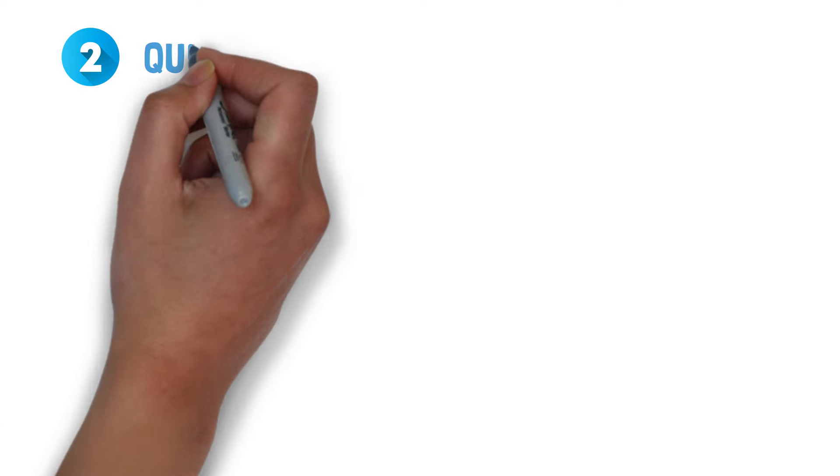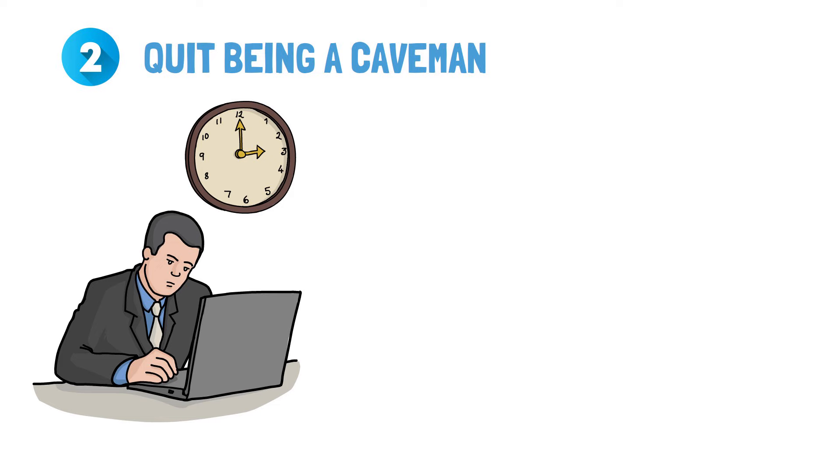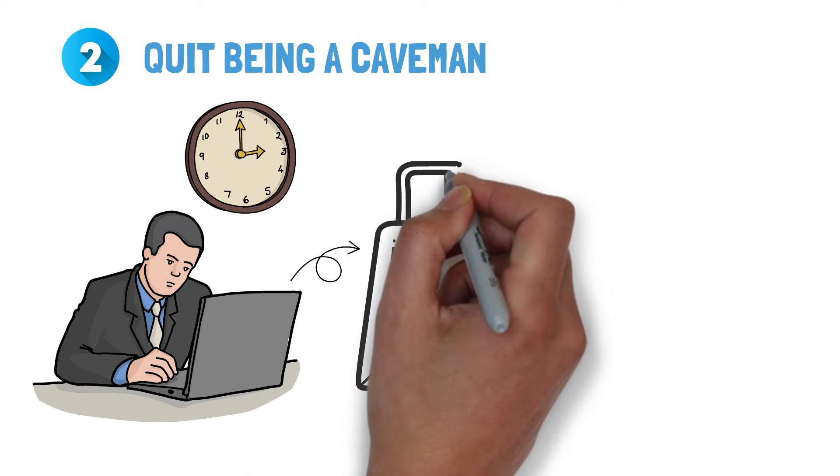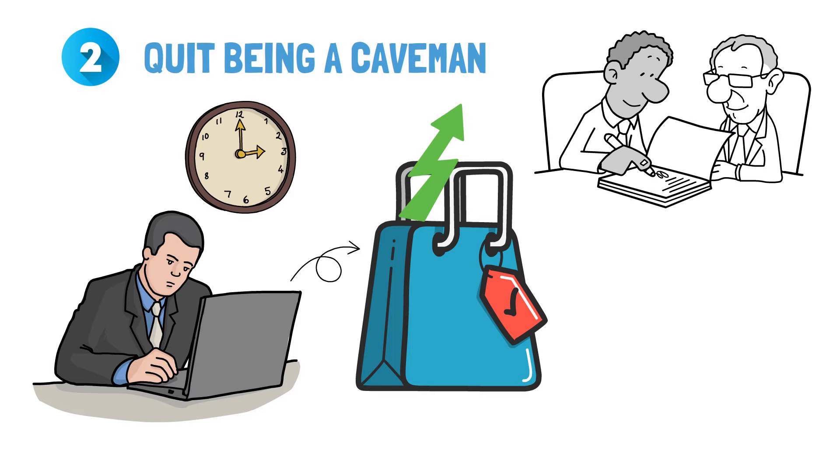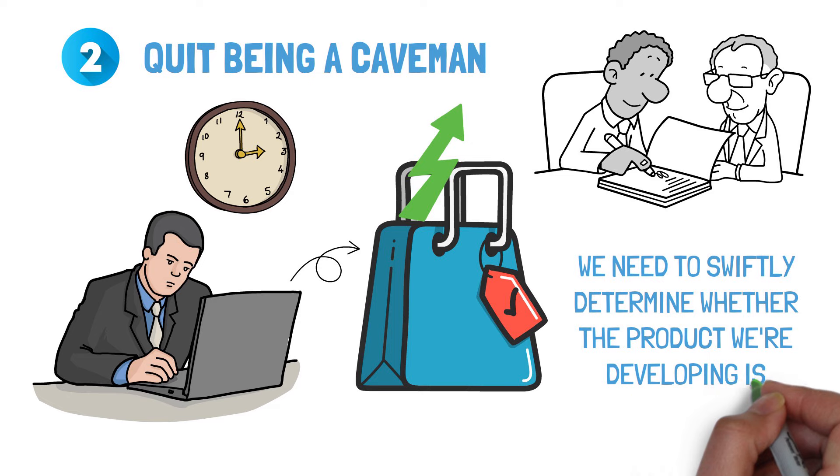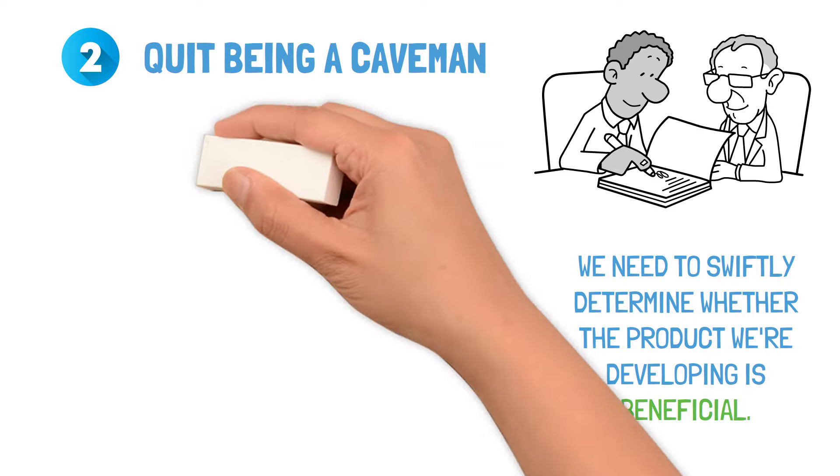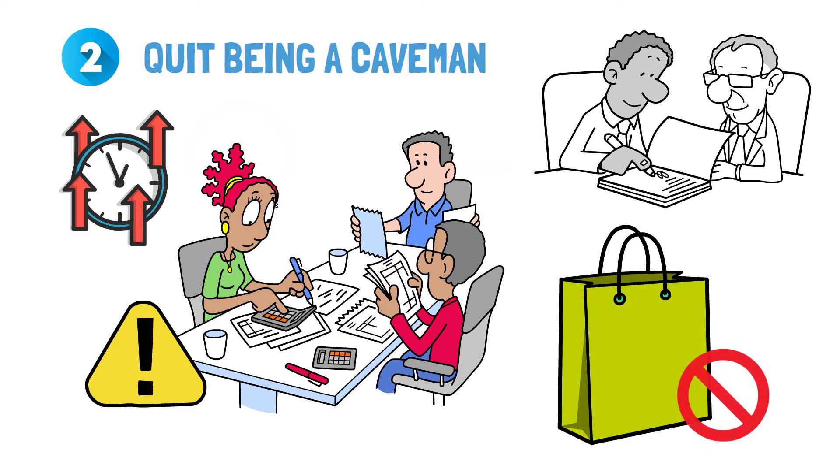Lesson 2: Quit being a caveman. Many entrepreneurs make the mistake of working in isolation for an extended length of time to develop and improve their product. This can be a major issue because, in order to create a viable business strategy, we need to swiftly determine whether the product we're developing is beneficial. Otherwise, we risk wasting time and resources developing a product that no one wants.